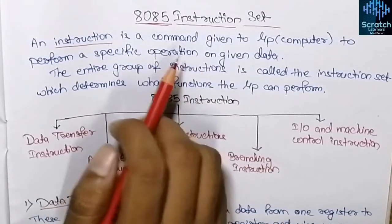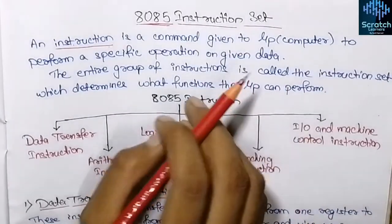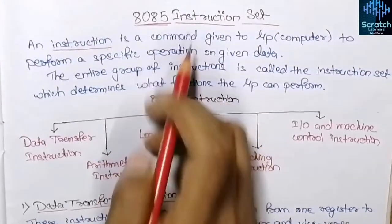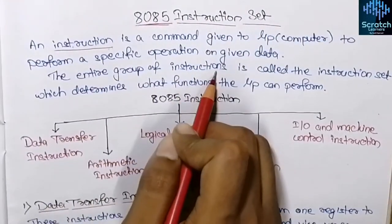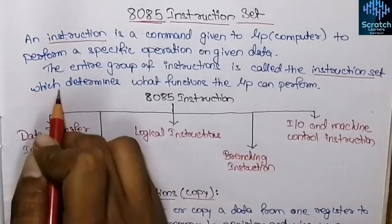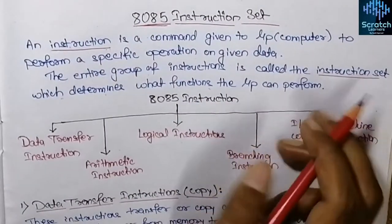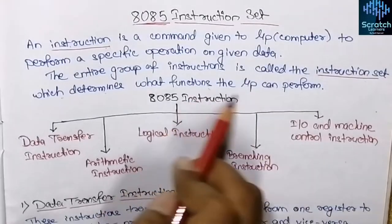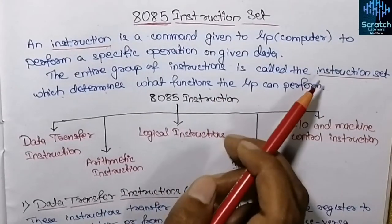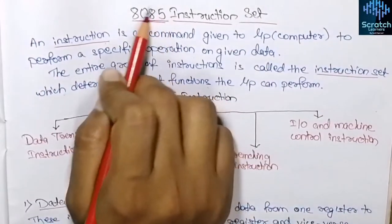An instruction is a command given to the microprocessor to perform an operation on some data. The entire group of instructions is called the instruction set, which determines what functions the microprocessor can perform. Whatever functions the microprocessor is going to perform is dependent on the instruction set.